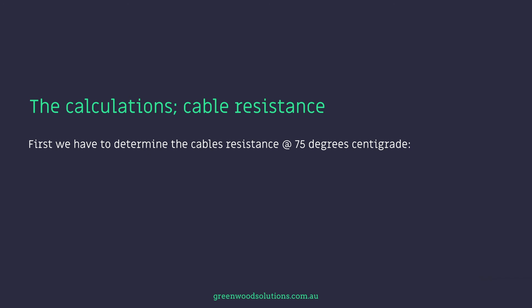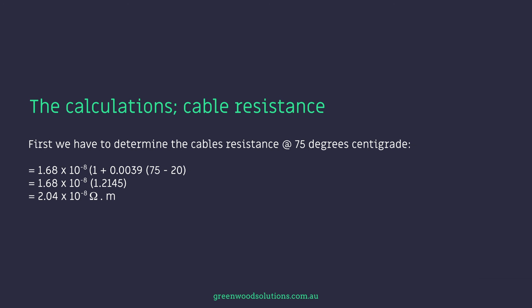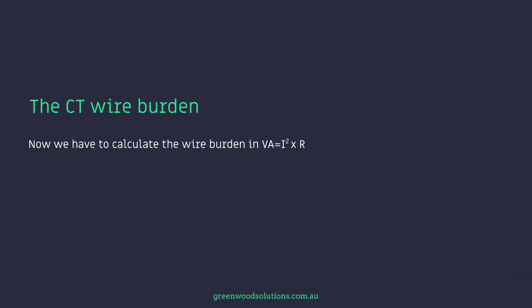We have to determine the cable's resistance at 75 degrees centigrade. The calculation is 1.68 times 10 to the power negative 8, multiplied by brackets 1 plus 0.0039, brackets 75 minus 20 — where 75 minus 20 are the degrees. That equals 1.68 times 10 to the power negative 8, times 1.2145, giving 2.04 times 10 to the power negative 8 ohms per metre. Then we calculate the wire burden in VA, which equals I squared times 2.04 times 10 to the power negative 8 ohms per metre, times the 15 metre length, divided by 1.6 times 10 to the power negative 5 per metre squared.